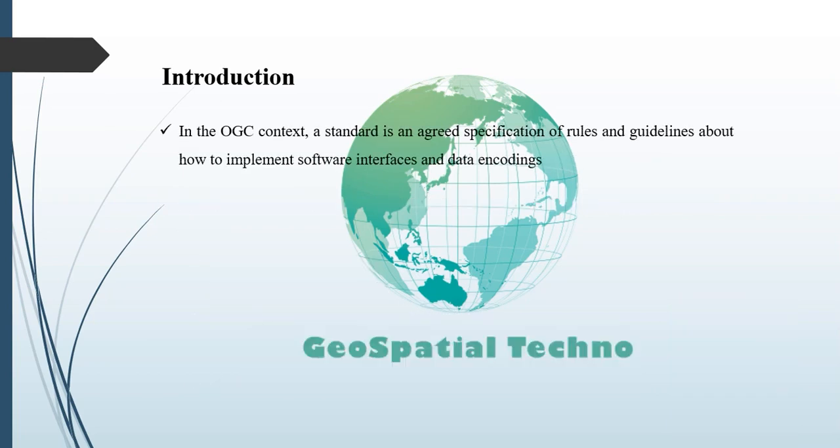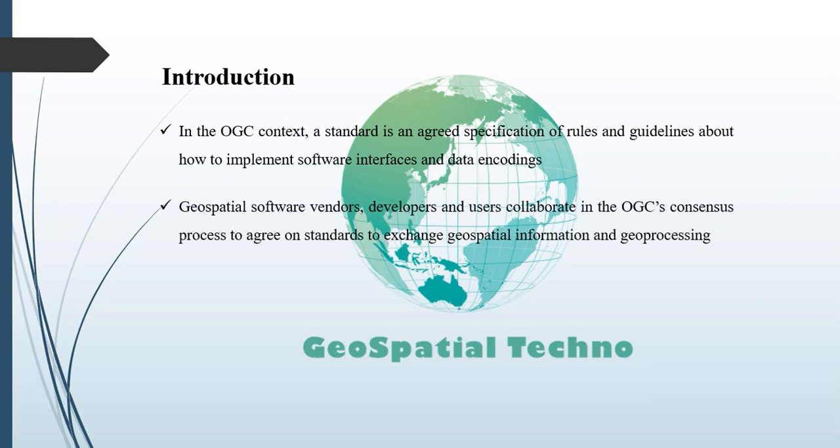In the OGC context, a standard is an agreed specification of rules and guidelines about how to implement software interfaces and data encodings. GeoSpatial software vendors, developers, and users collaborate in the OGC's consensus process to develop and agree on standards that enable information systems to exchange GeoSpatial information and instructions for GeoProcessing.